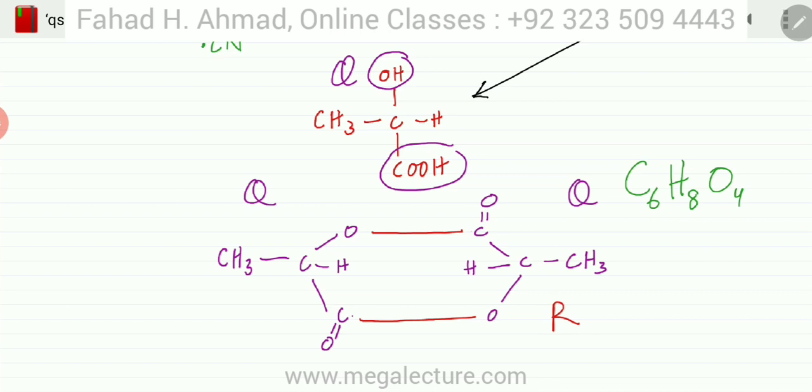The final question was to figure out the empirical formula of R. I've totaled the number of carbon, hydrogen, and oxygen atoms. I'm getting C6H8O4 which gives an empirical formula of, if I simplify by dividing everything by 2, C3H4O2.